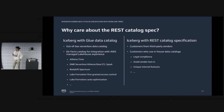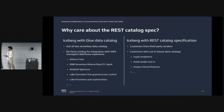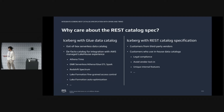First of all, why do we even care about the REST catalog spec? Don't we already have Glue Data Catalog? The answer is that they are for two very different types of customers. For Glue Data Catalog, it is still the de facto catalog that we recommend for customers. It is the out-of-the-box serverless data catalog — if you have an AWS account, you get a Glue Data Catalog out-of-the-box and it just works. It integrates first with all the AWS managed lakehouse experience, including Athena, EMR, Glue ETL, Redshift Spectrum, Lake Formation, fine-grained access control, and auto-compaction features.